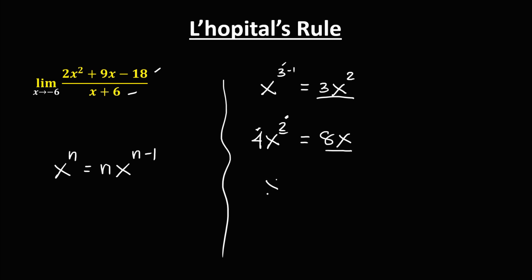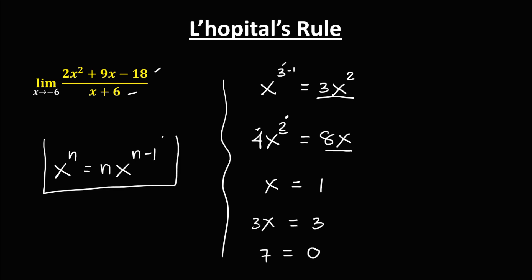The derivative of x is 1. The derivative of 3x is 3. And the derivative of a constant is 0. This is how to find the derivative using this formula.